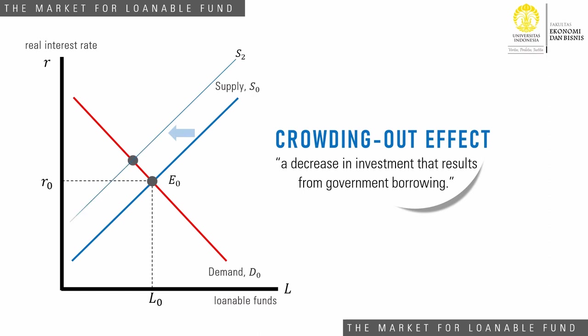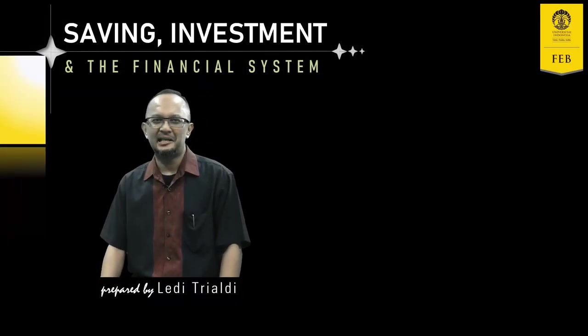The supply curve shifting to the left increases the equilibrium real interest rate, and the result is that private investment will be lower, as shown in the diagram. The reduction in private investment is the crowding out effect.